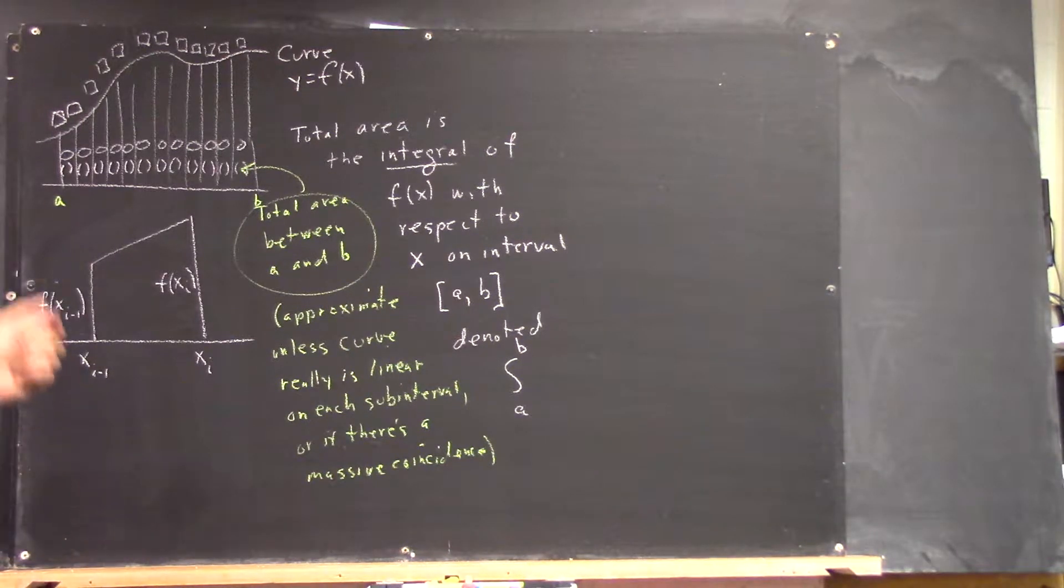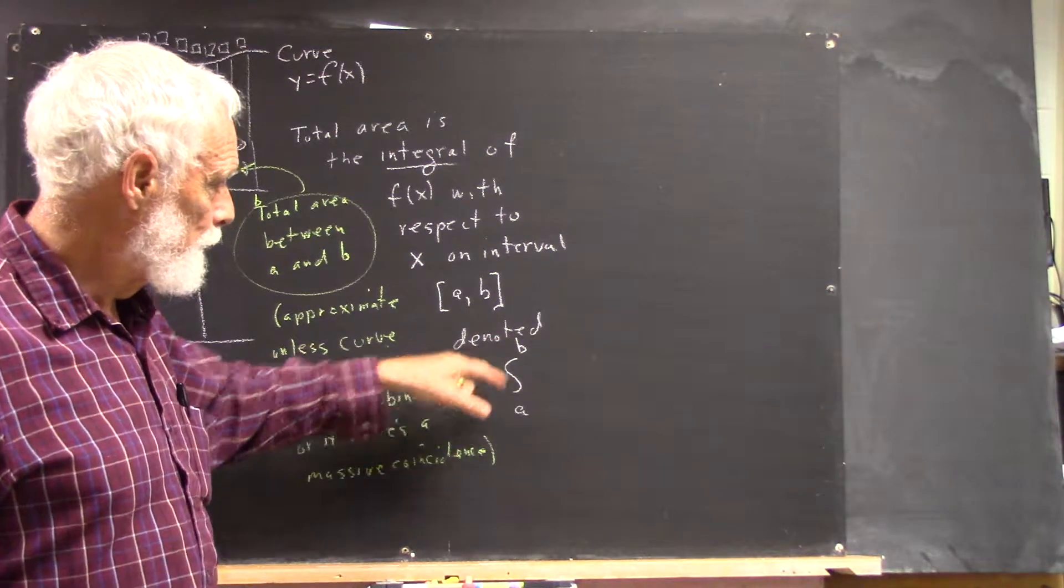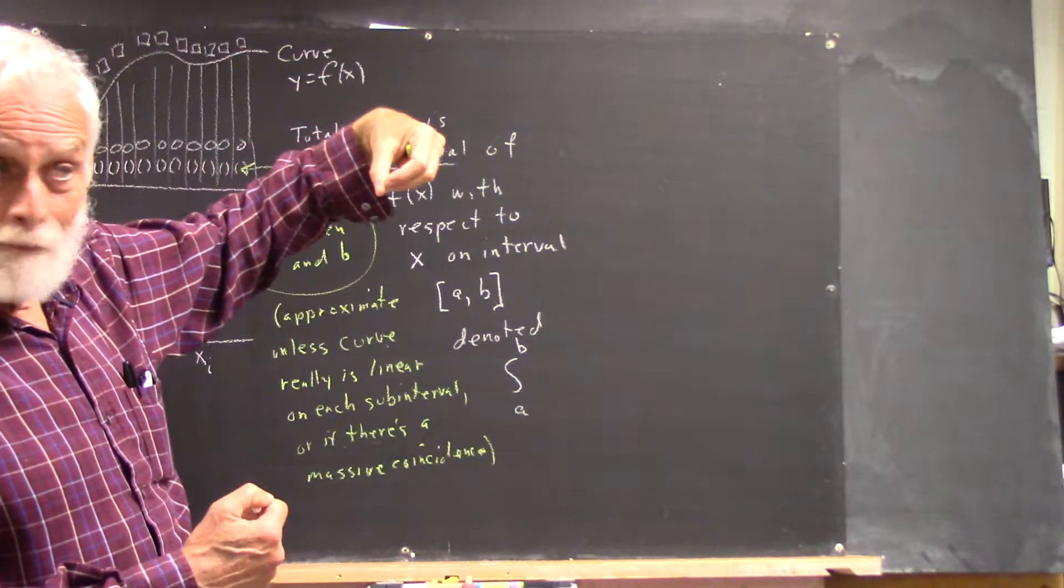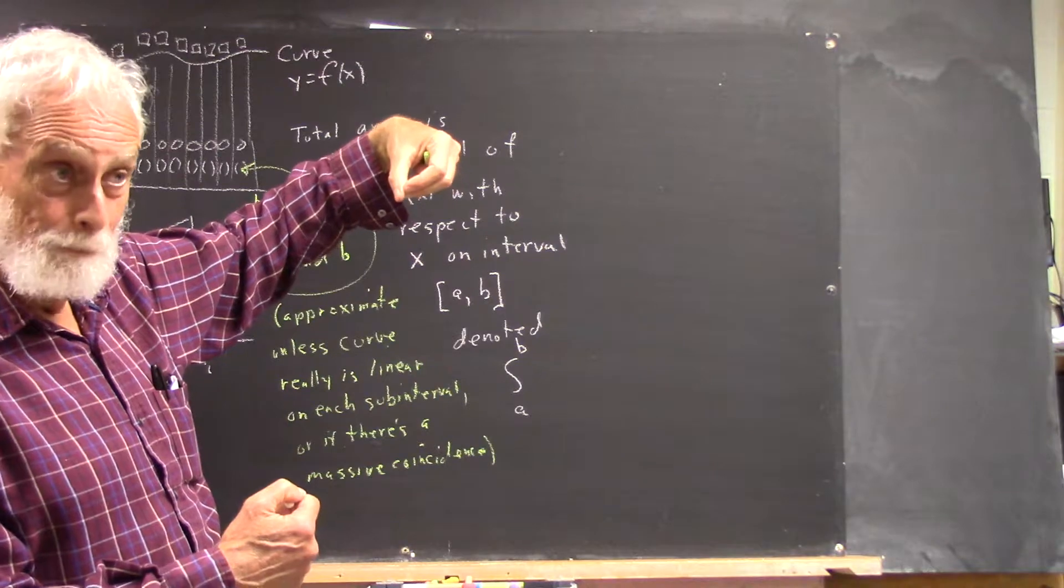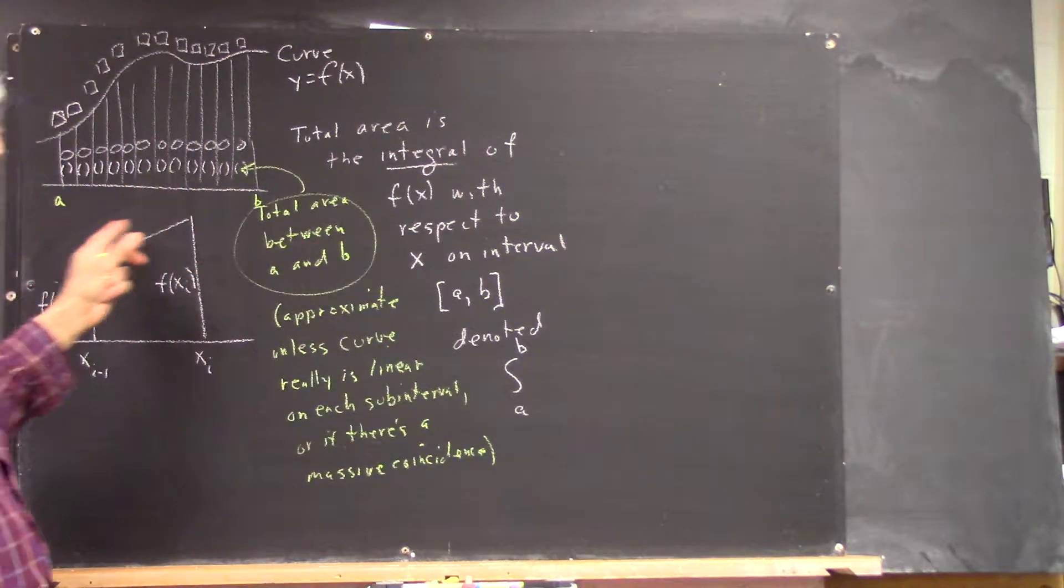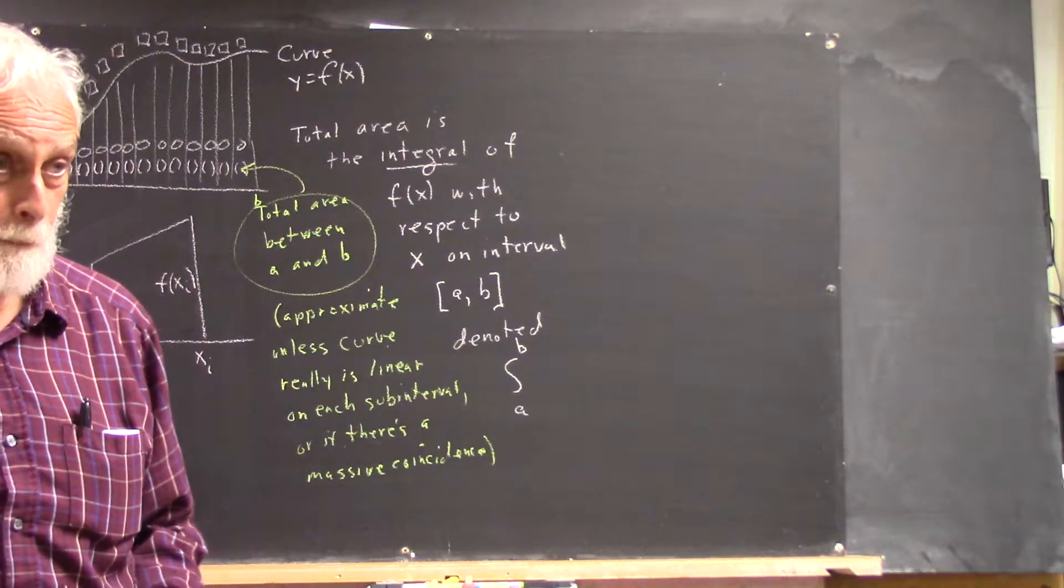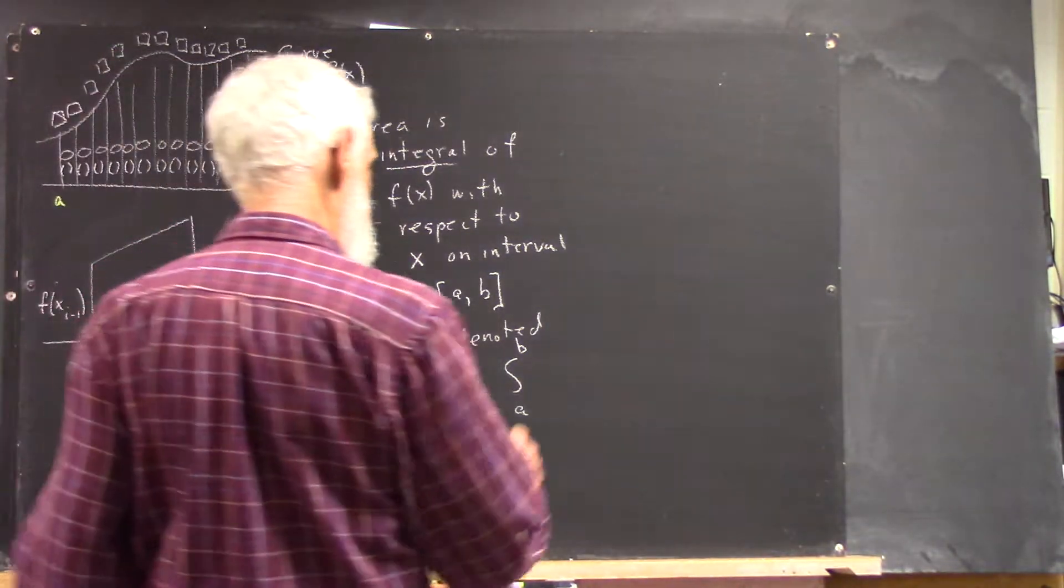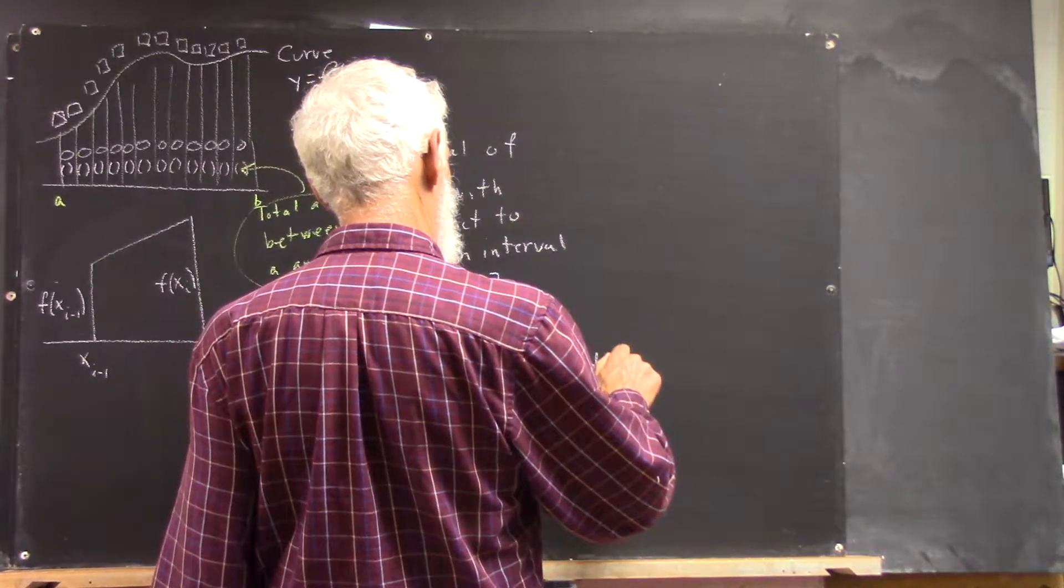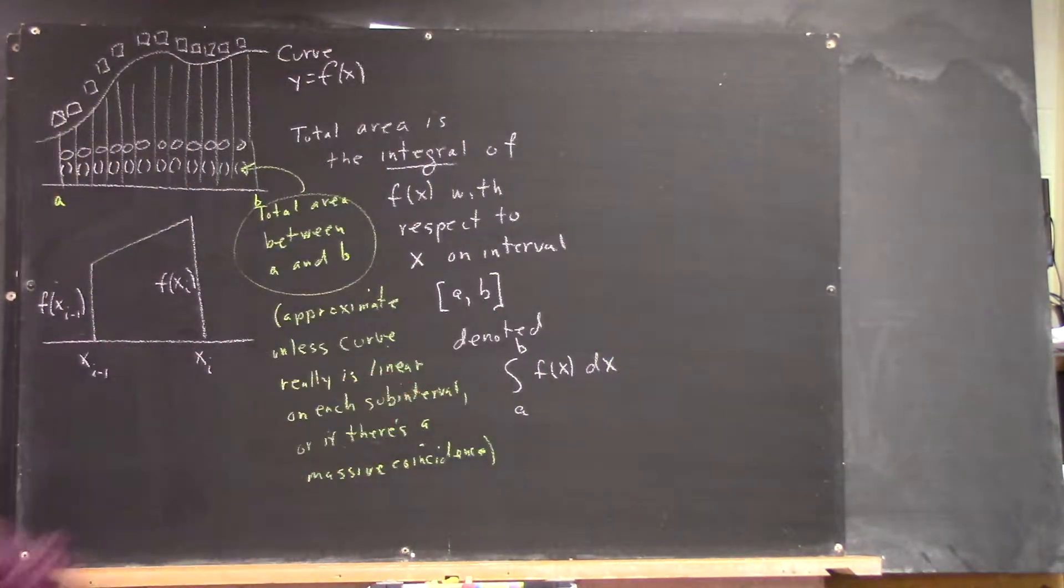Well, it's denoted by this. This thing is kind of like an elongated S - it's an integral sign. It kind of stands for a sum because it's a sum. It can be visualized as a sum of areas, and that's how we get it.